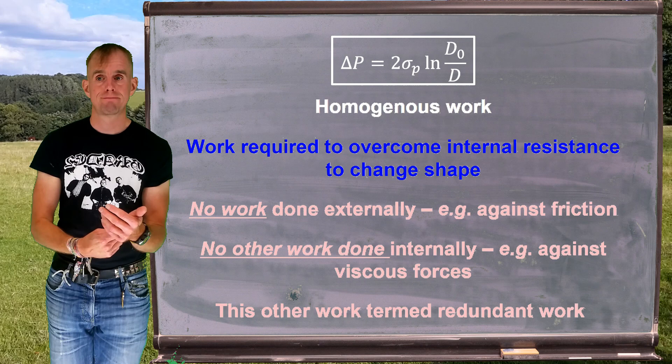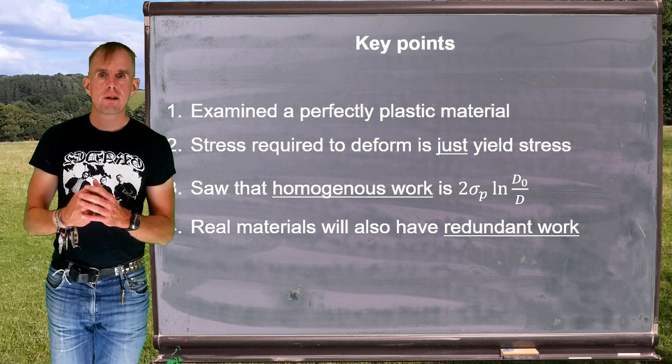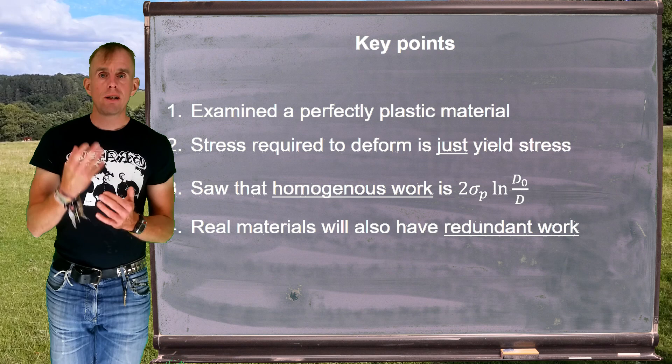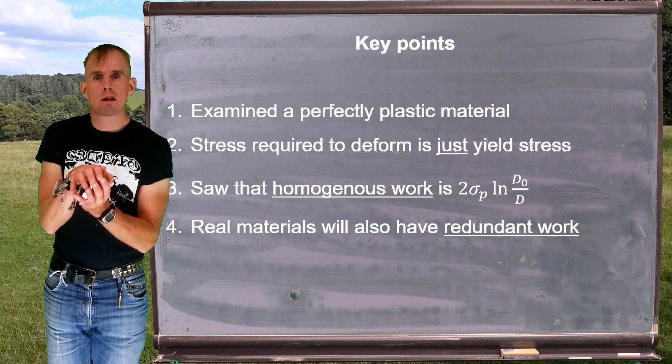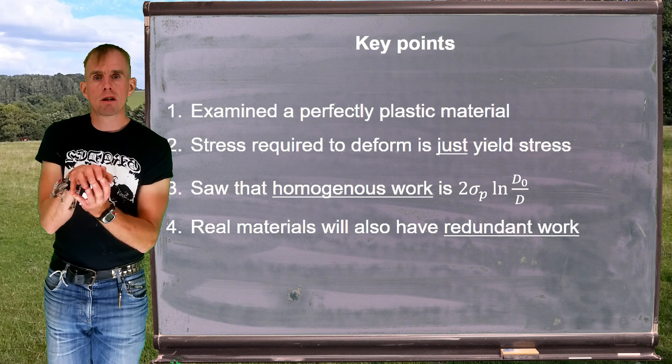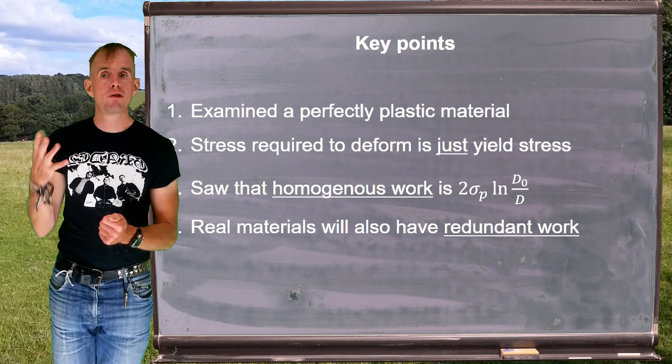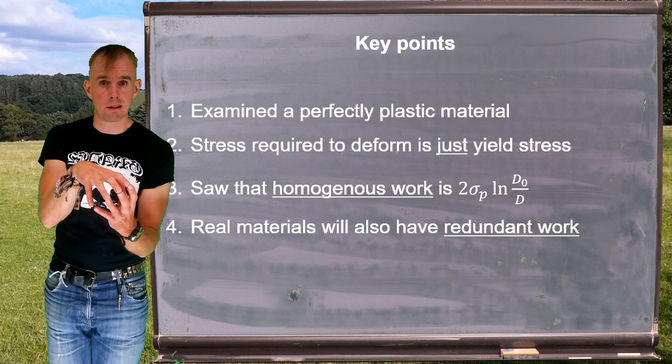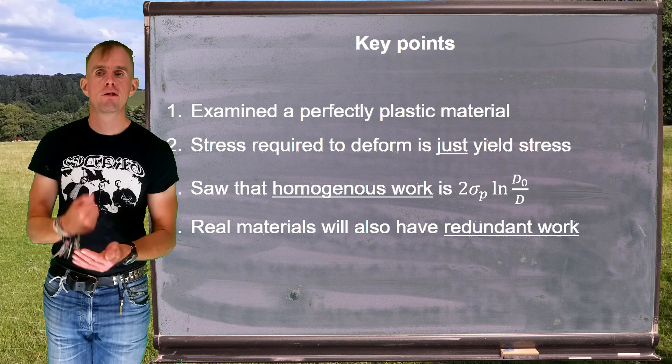So let's summarize. Our analysis for extensional flow to begin with has involved a perfectly plastic material. We've seen that perfectly plastic materials just need their yield stress to drive the deformation. We saw that even for simple material of this nature, there is a certain amount of work required to change shape. And we call this amount of work homogeneous work, and we wrote it in terms of a diameter change and a plastic bulk yield strength as 2 sigma p log d0 over d, where d0 is the original diameter and d is the final diameter. Real materials will also have additional work terms over and above homogeneous work, which is what we're going to explore next. And we will introduce something called redundant work.